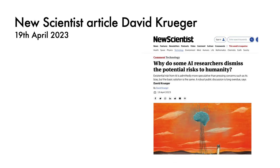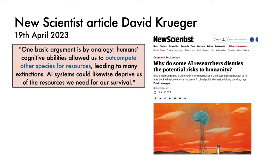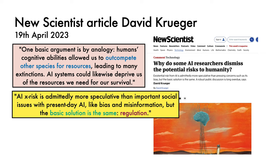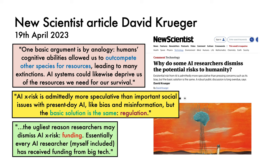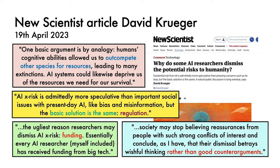Next, we have an article from David Kruger, an assistant professor at the University of Cambridge, asking why some AI researchers dismiss the potential risks to humanity. One basic argument is by analogy: humans' cognitive abilities allowed us to out-compete other species for resources, leading to many extinctions, and AI systems could likewise deprive us of the resources we need for survival. David points out that AI existential risk is admittedly more speculative than present-day issues like bias and misinformation, but the basic solution is the same: regulation. He also addresses what he describes as the ugliest reason researchers may dismiss AI existential risk — funding. Essentially every AI researcher has received funding from Big Tech, and he writes that society may stop believing reassurances from people with such strong conflicts of interest, concluding that their dismissal betrays wishful thinking rather than good counter-arguments.